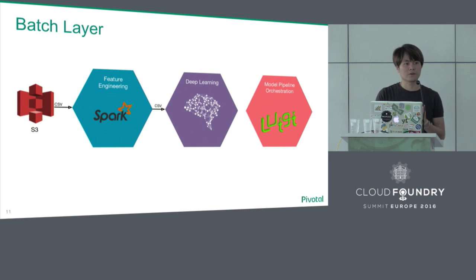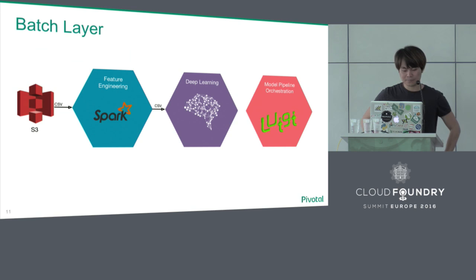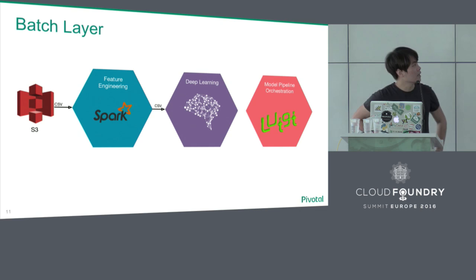In the batch layer, as I said, we stored the data in S3 and then spun up an EMR cluster. Specifically we used PySpark because we love Python in the data science area. Afterwards we spun up the GPU cluster. Here we used Keras, which is a Python abstraction layer on top of Theano and TensorFlow. And in the batch block we were also using Luigi, which is a project by Spotify to create analytical pipelines.